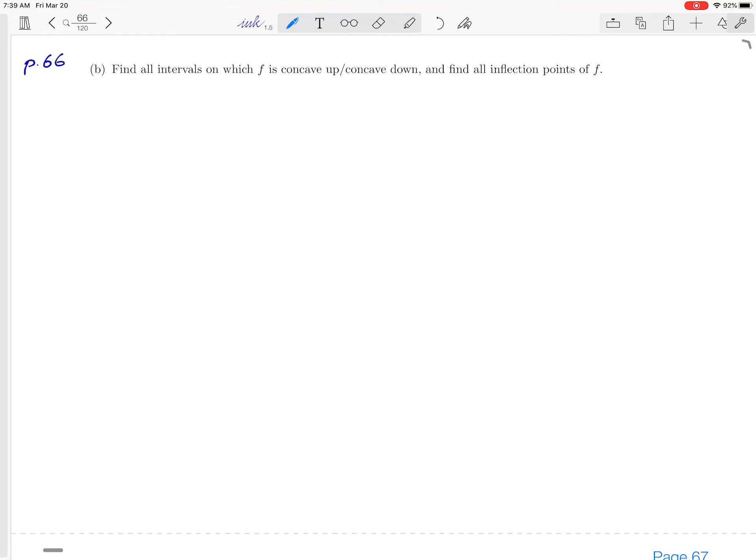Okay, so we are still on page 66 of the workbook. We're going to complete exercise number one where they gave us a function and asked us information about how the function is behaving. We already did the part where it's increasing and decreasing, and now we're being asked to figure out where this function is concave up and concave down and also where its inflection points are. In contrast to part A, this is asking...